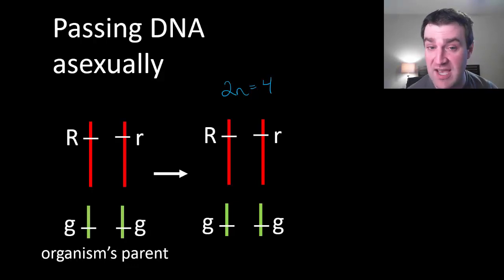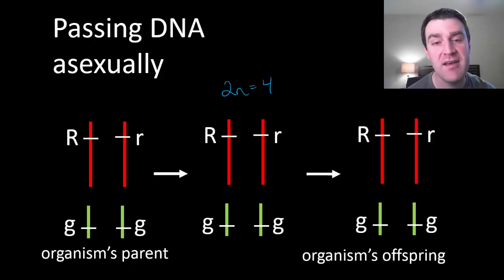Again, barring mutation, the organism will be an exact copy of the original parent. If this organism itself goes on to reproduce asexually, then the same thing. And so the idea is that asexual reproduction, for the most part, generates exact genetic copies of that one parent.